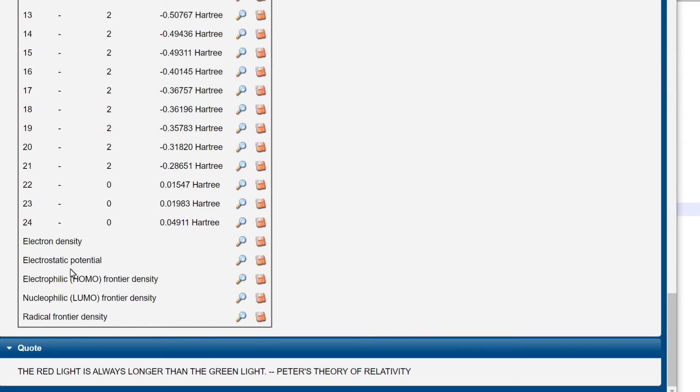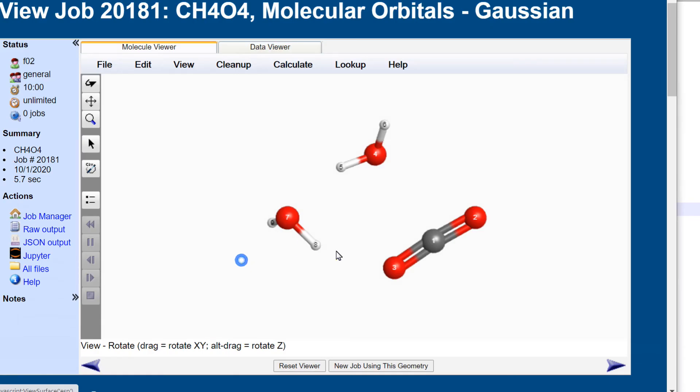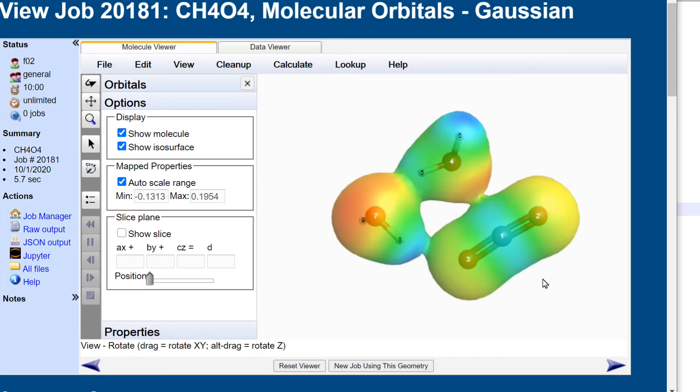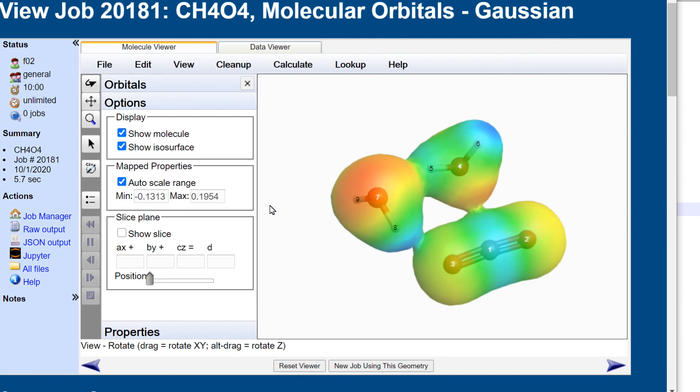And going down here to find electrostatic potential. And that is the surface. So this is the electron density surface. And painted on that, the electrostatic potential.